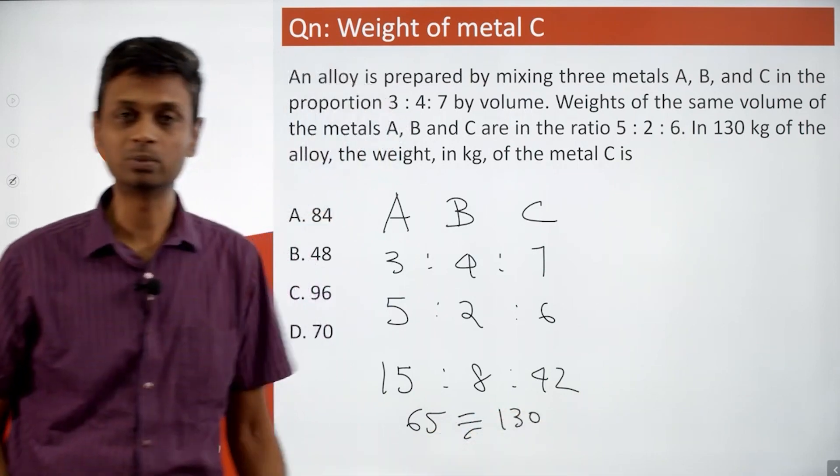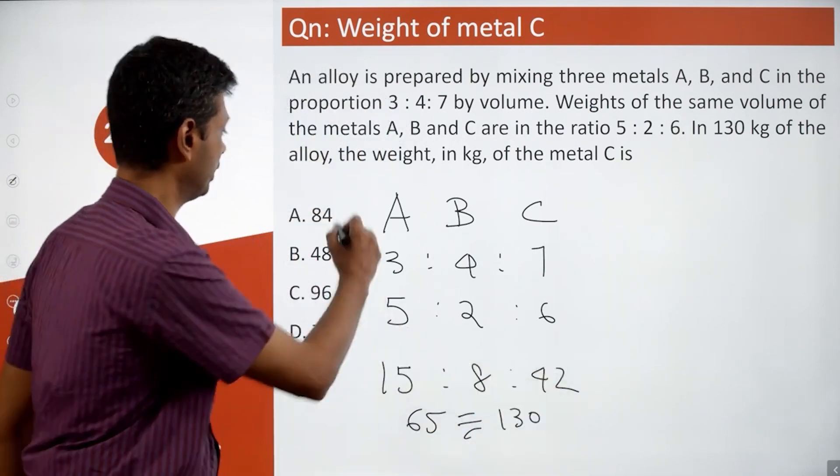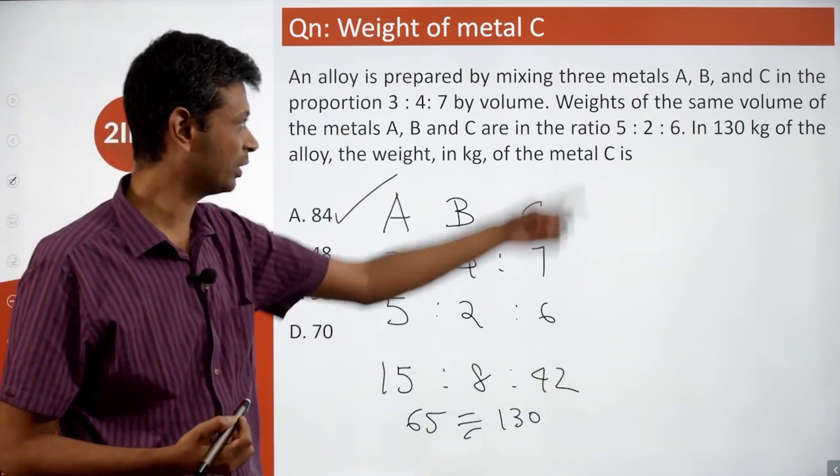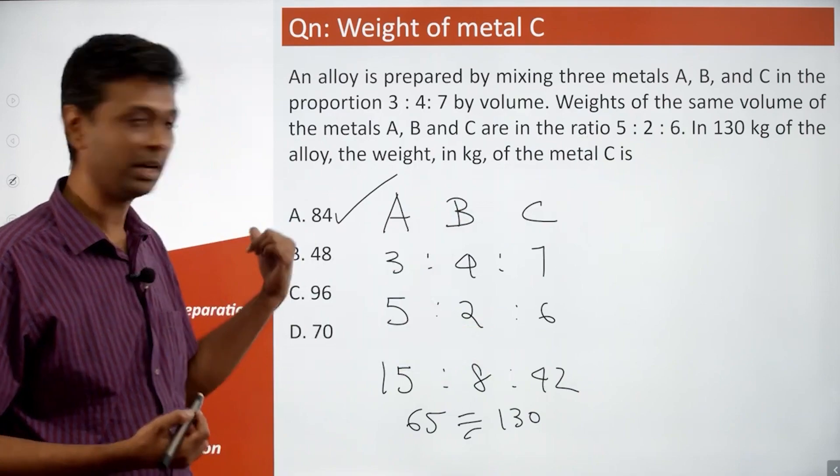This is lovely, into 2. 42 units should correspond to 84 kilograms. Luckily, the numbers just fall in place. 65 units is 130, so 42 units will be 84 kilograms.